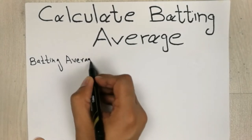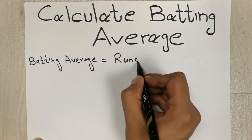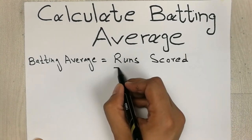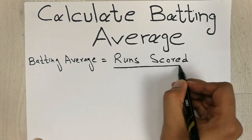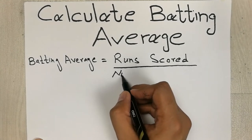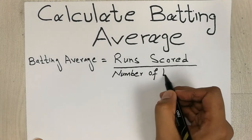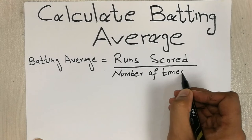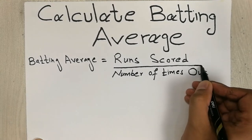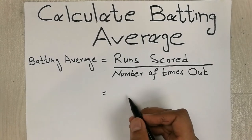Batting average is equal to runs scored divided by number of times out. So how much runs you scored in total and how many times you were out.